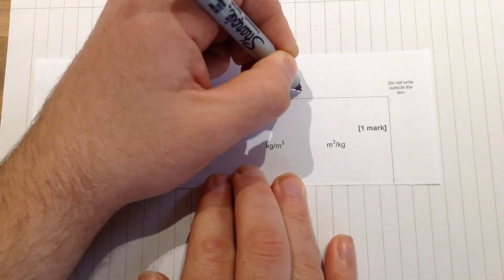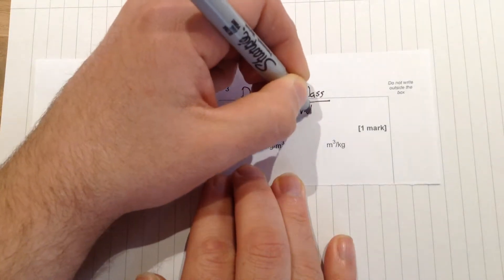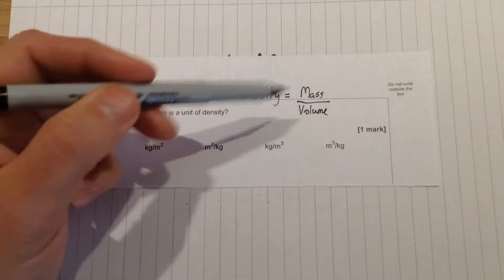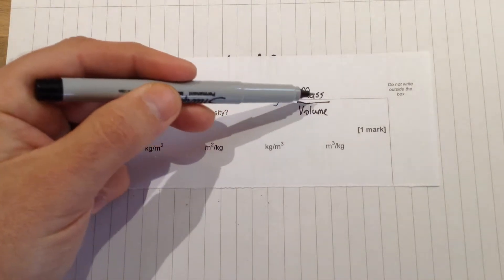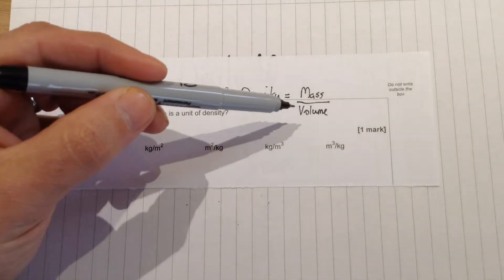Now if you remember, density is mass divided by volume. So what we want is to start off with a unit of mass, so maybe kilograms, grams, something like that, and then a unit of volume.